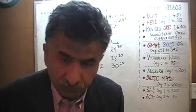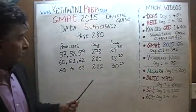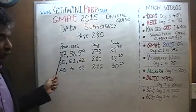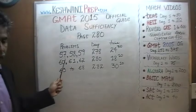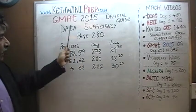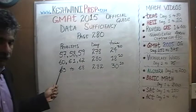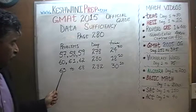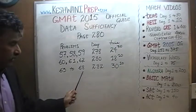Let's take a look at all the data sufficiency problems appearing on page number 280. You will find the solutions to problem number 57, 58, and 59 — those three problems were done on day number 278. Just type in 'GMAT math day 278' and you will find the solutions. Problems 60, 61, and 62 are on day number 280.